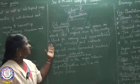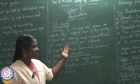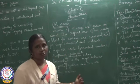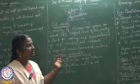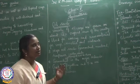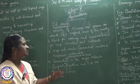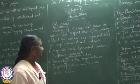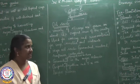Oil seeds are used for cooking and are a raw material for soap, cosmetics, and ointments. Major oil seeds are groundnut, mustard, sunflower, and castor seeds. India is said to be the second largest producer of groundnut next to China. Major groundnut-growing states are Gujarat, Rajasthan, and Tamil Nadu.